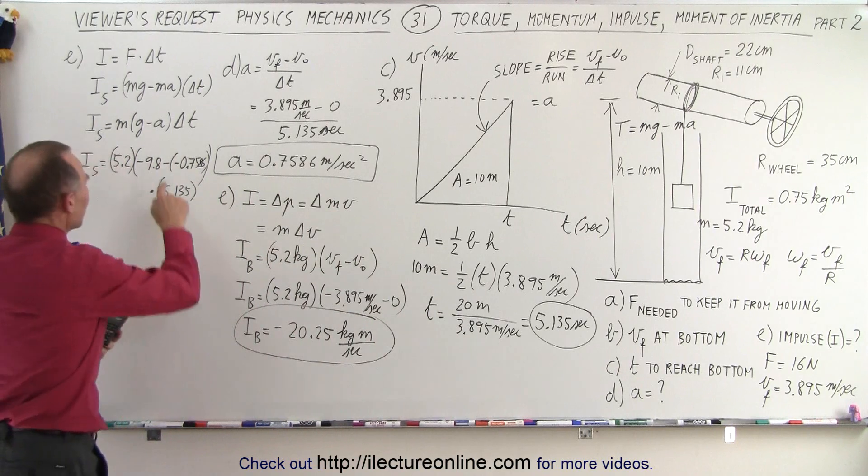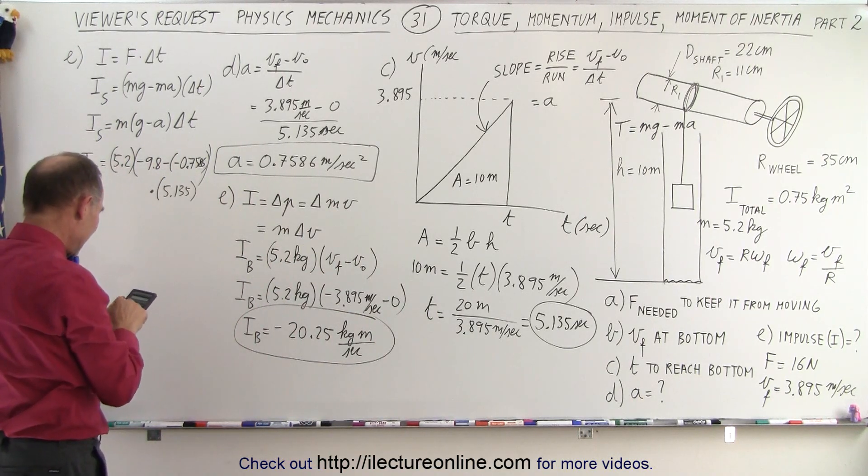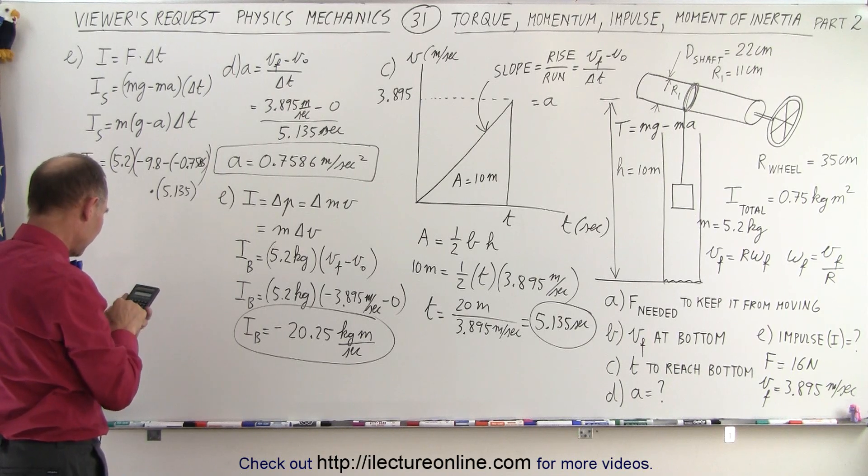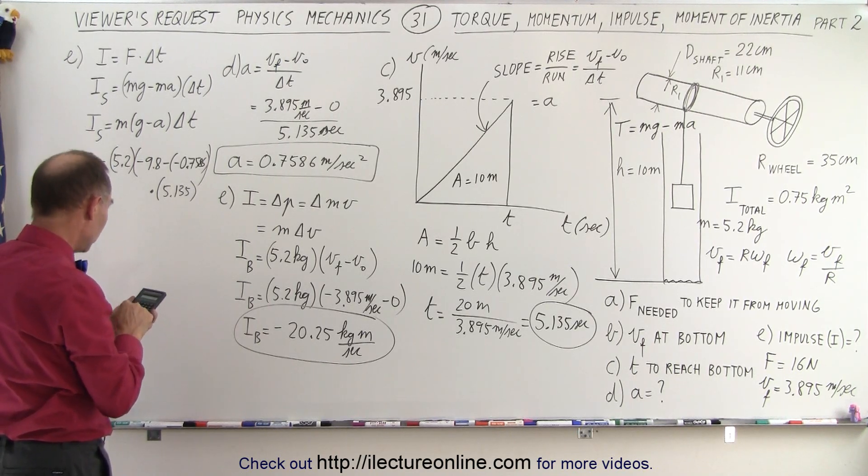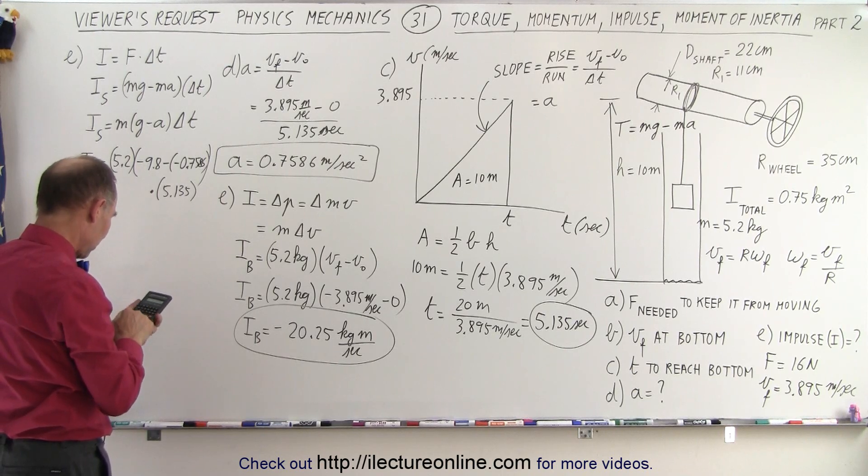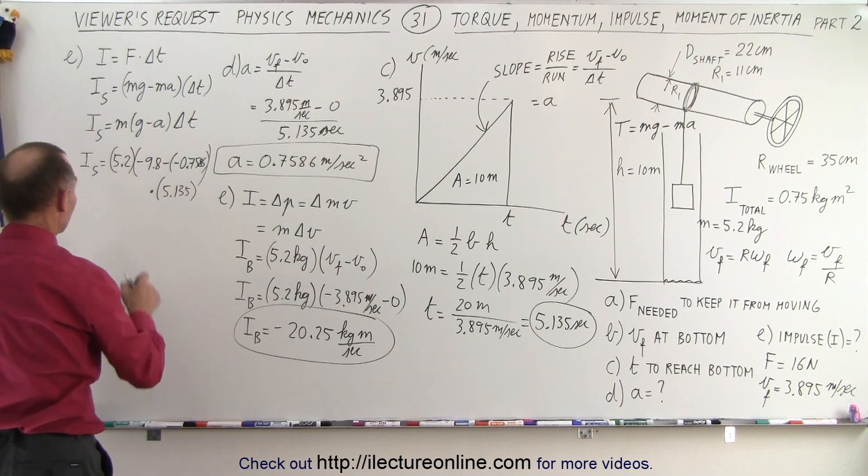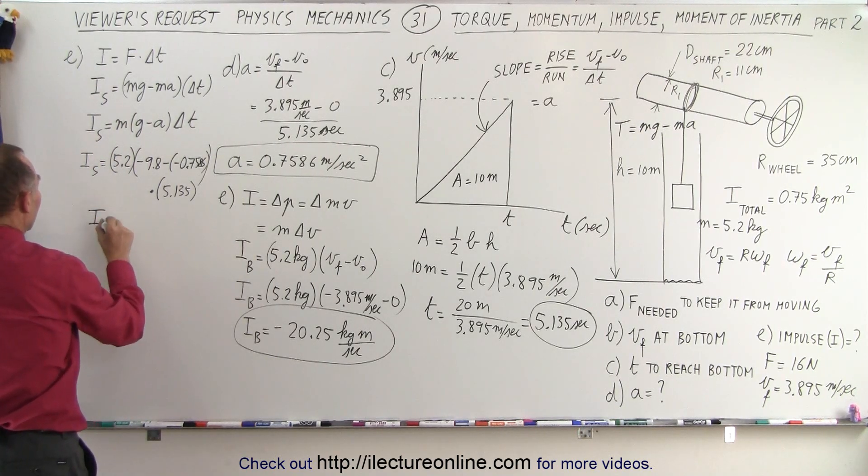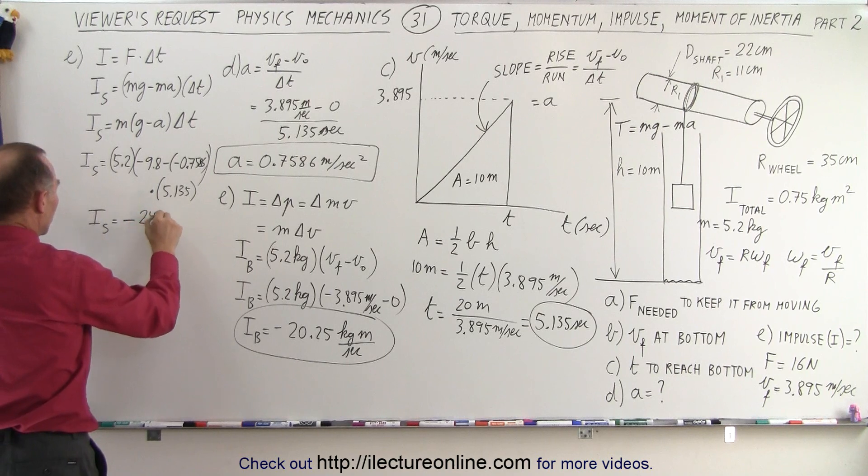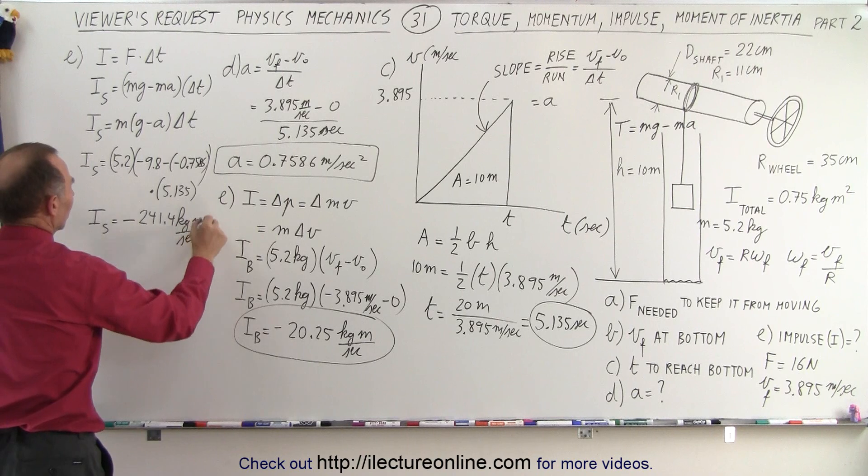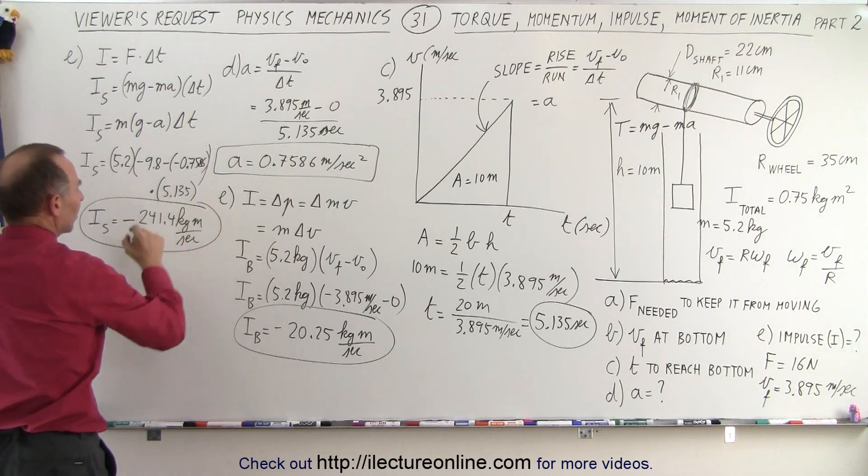So we have a minus times a minus is plus. So we have 9.8, which is a minus, 9.8 minus the 0.7586, 0.7586 times 5.2 and times 5.135. equals. And so we have an additional impulse, which is also going to be negative. I sub s is going to be a negative 241.4 kilograms meters per second.